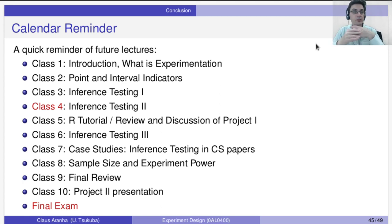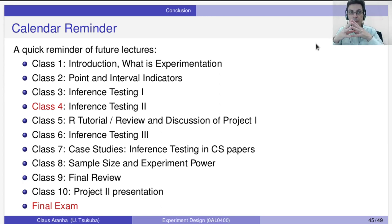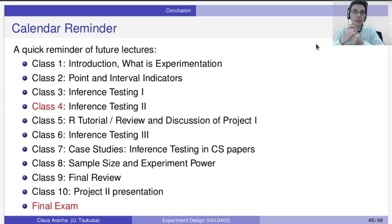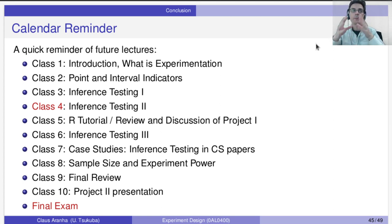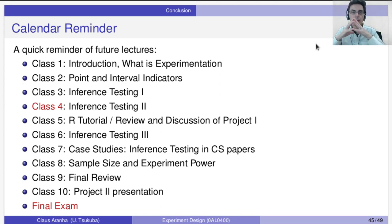On class 8, we're going to talk about sample sizes — something that until now we have assumed we're going to test enough. We're going to talk a little bit more concretely about that. On class 9, we're going to do a final review. Class 10 will be the presentation of project 2. Just to remember, the deadline of project 2 is actually after the final exam, but we have a presentation to get everyone to talk about the results and discuss project 2. Finally, we're going to have the final exam after that.